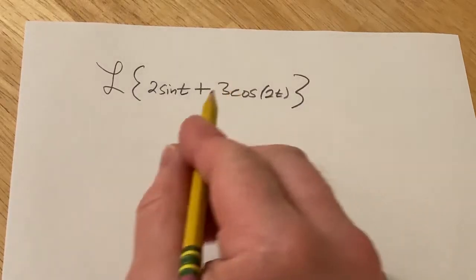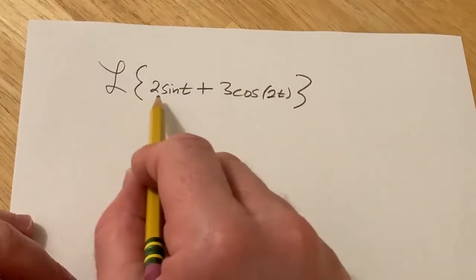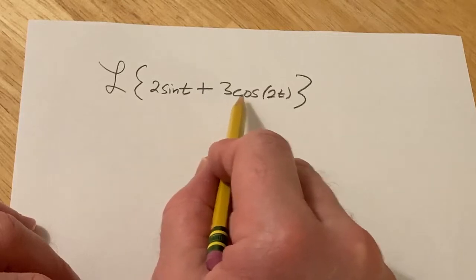Hi, in this problem we're going to find the Laplace transform of this function. So you have 2 sine t plus 3 cosine 2t.